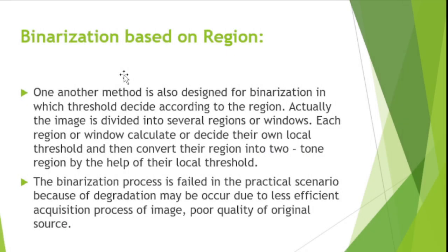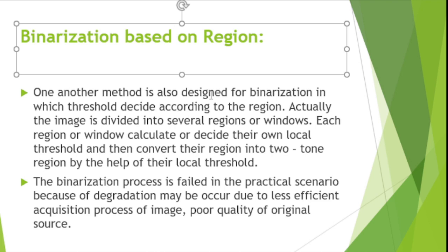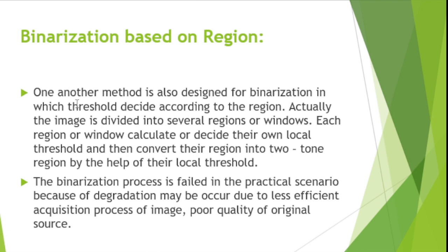Binarization based on region is another method designed for Binarization in which the threshold is decided according to the region. The image is divided into several regions or windows. On the basis of those windows and regions we decide the threshold value. Each region or window calculates its own local threshold and then converts that region into a two-tone region using its local threshold.